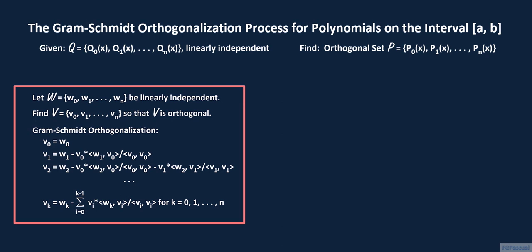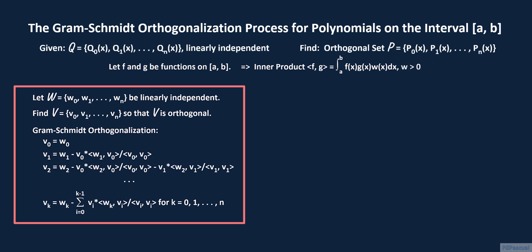In order to apply the Gram-Schmidt orthogonalization process to polynomials and to functions in general, we need to define an inner product between functions. Let f and g be functions defined on the closed interval from x equals a to x equals b. Assuming that f and g are Riemann integrable on that interval, a frequently used definition for the inner product between f and g is the integral from a to b of the product of f of x, g of x, and a weight function w of x. This is a weighted inner product, where w is positive on the interval from a to b. We will use this definition for the Gram-Schmidt process as applied to polynomials.